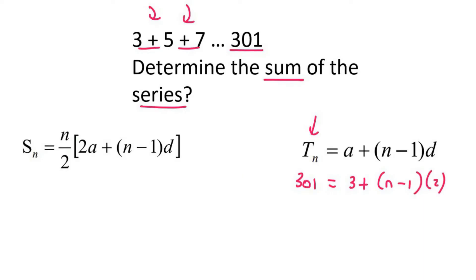We can then solve this by moving the 3 over to the left hand side, which will become 298 equals to n minus 1 times 2. Now, you could multiply the 2 into the bracket, but what I like to do is divide by 2 on the left instead. And so that will give us 149 equals n minus 1. And so if we solve for n, we will find that n is equal to 150. This means we have 150 terms.